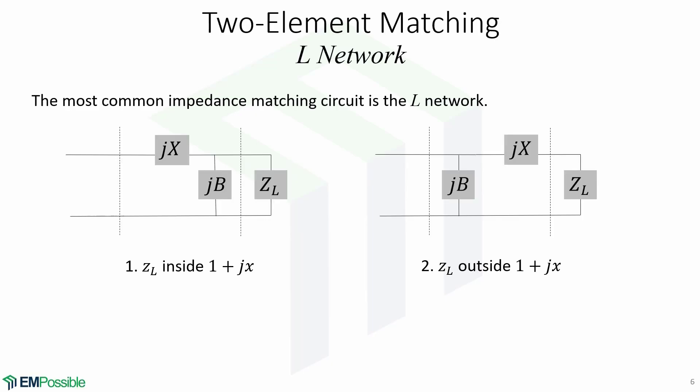The first matching network we're going to look at is the L-network, which is the most common impedance matching circuit. It is also one of the simplest because it uses only two reactive elements to match any arbitrary load to the transmission line. There are two possible configurations for this network as shown in these figures.